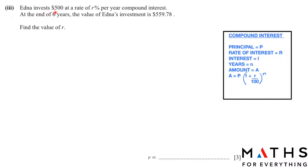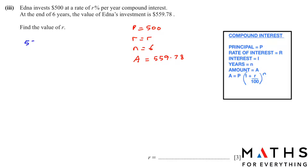Edna invests $500 at a rate of r% per year compound interest. At the end of six years, the value of her investment is $559.78. Find the value of r. Using the compound interest formula with P = 500, n = 6, and A = 559.78, we write: 559.78 = 500 × (1 + r/100)^6.